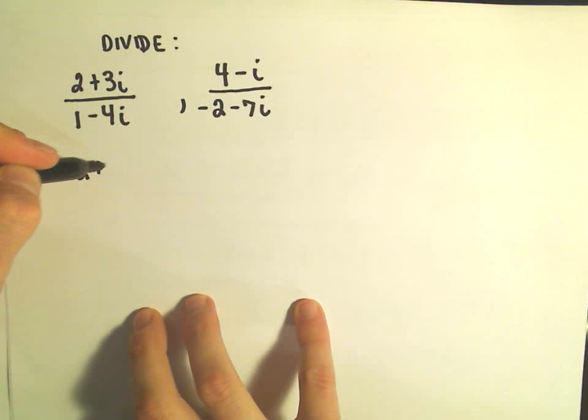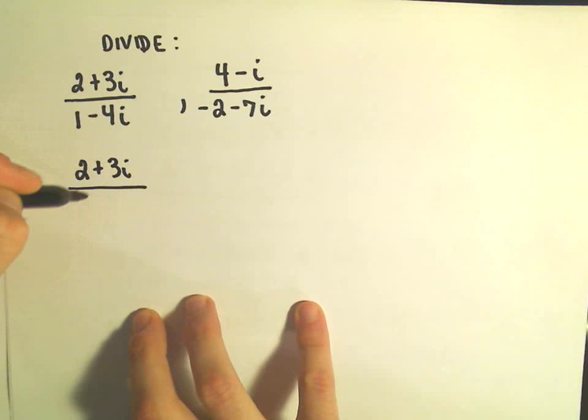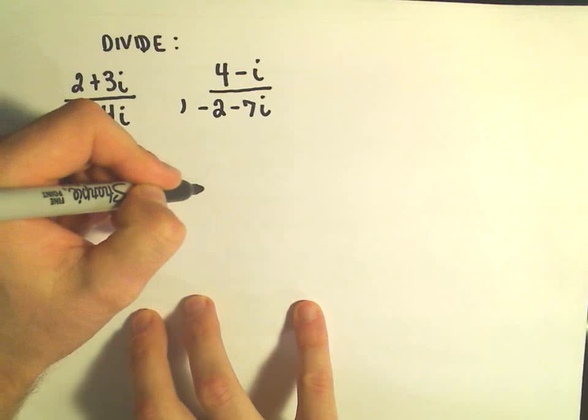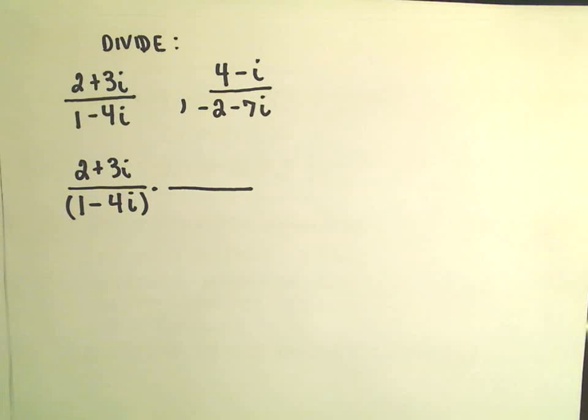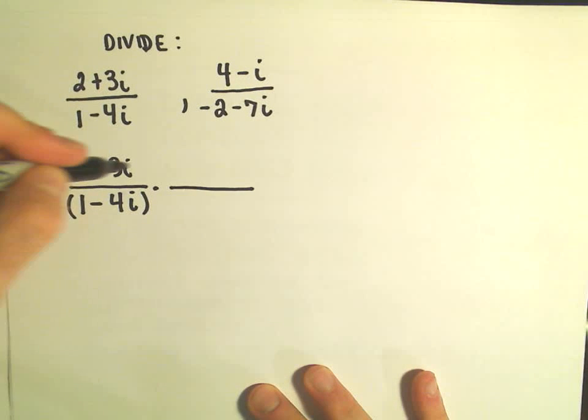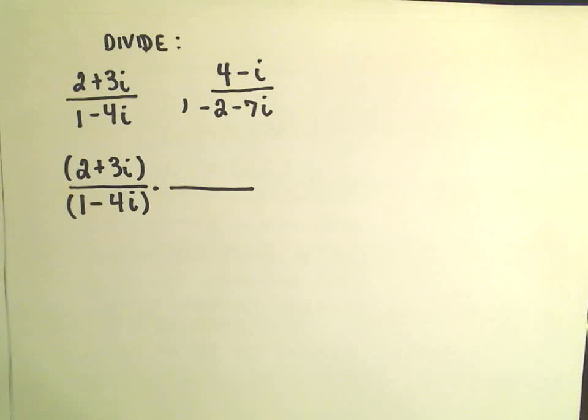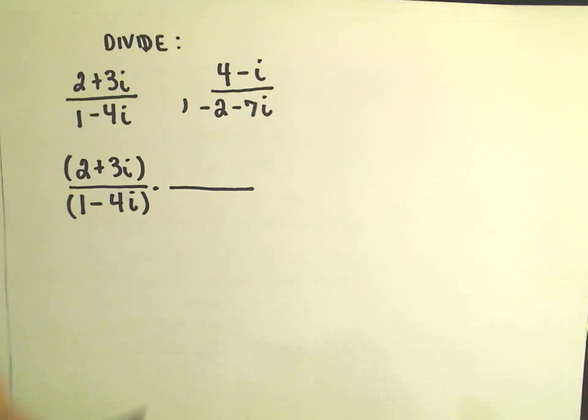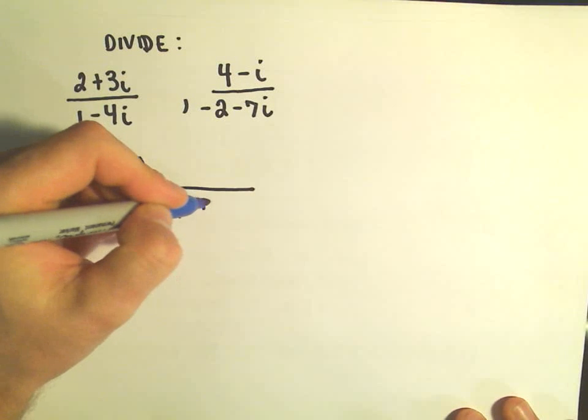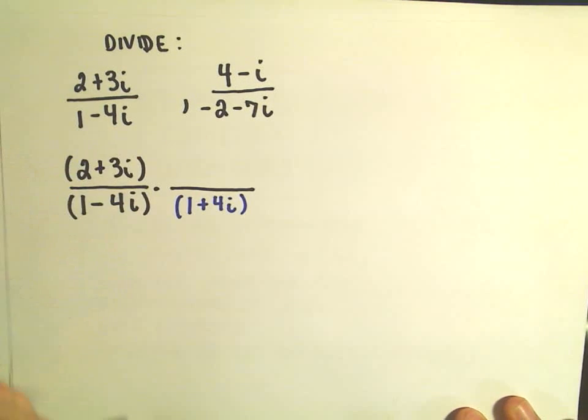So in the first one, 2 plus 3i over 1 minus 4i, what I do is I multiply by the complex conjugate of the denominator. So definitely there's complex numbers in both the numerator and the denominator. The complex conjugate of 1 minus 4i is simply going to be 1 plus 4i. We just change the sign in the middle.